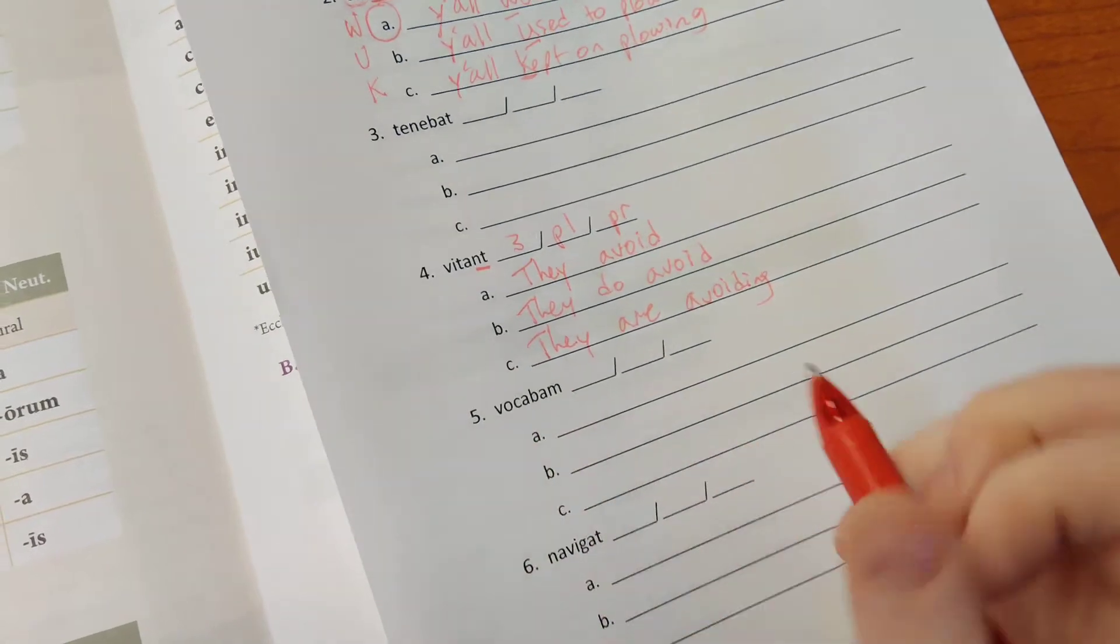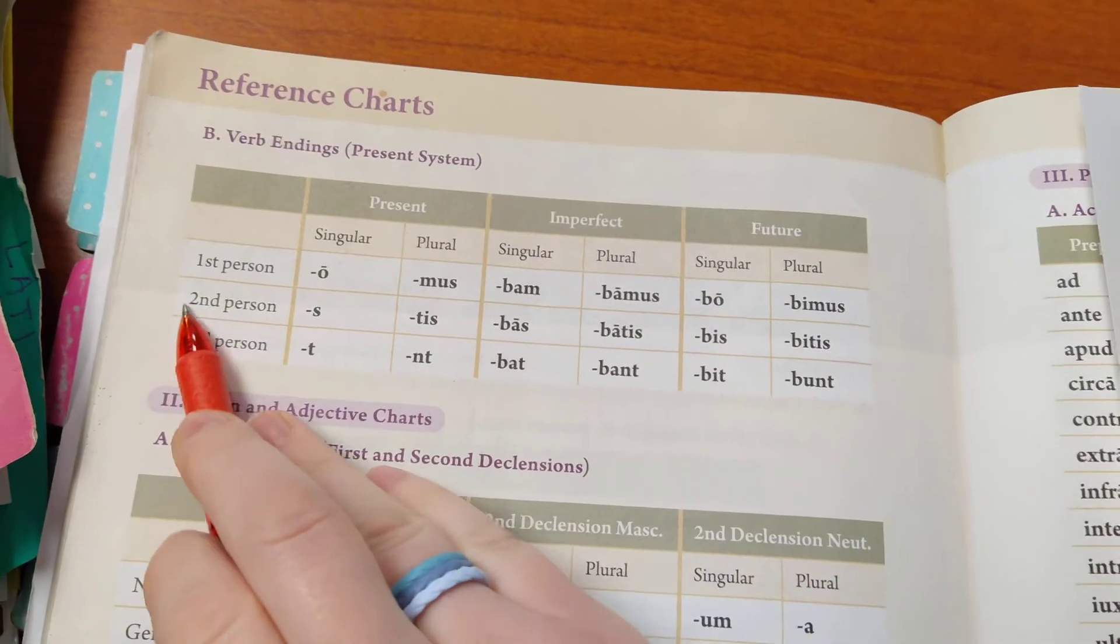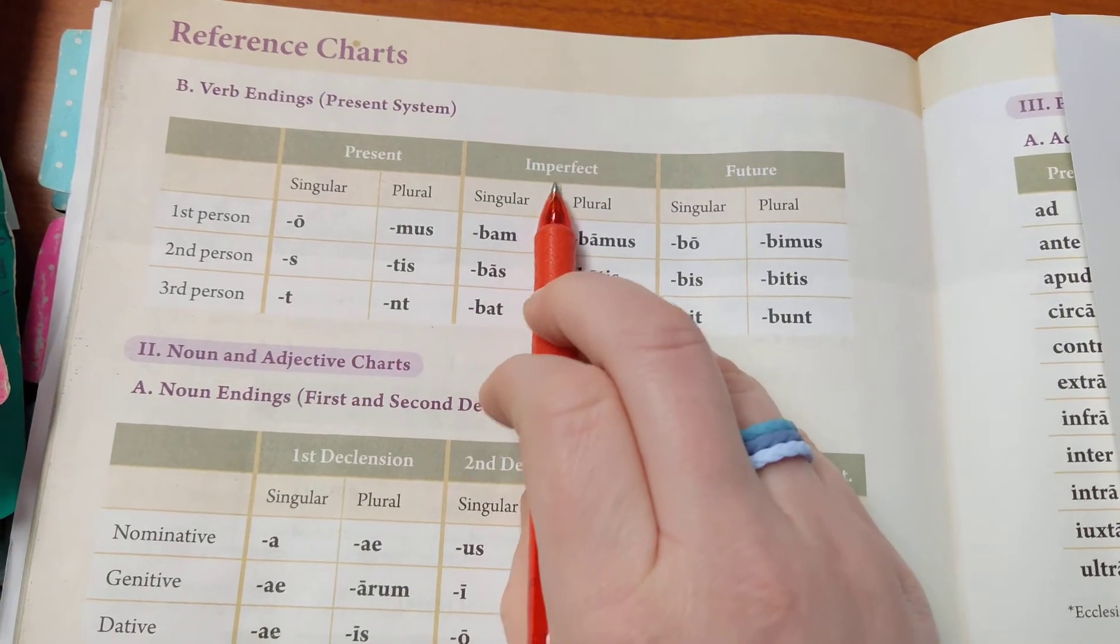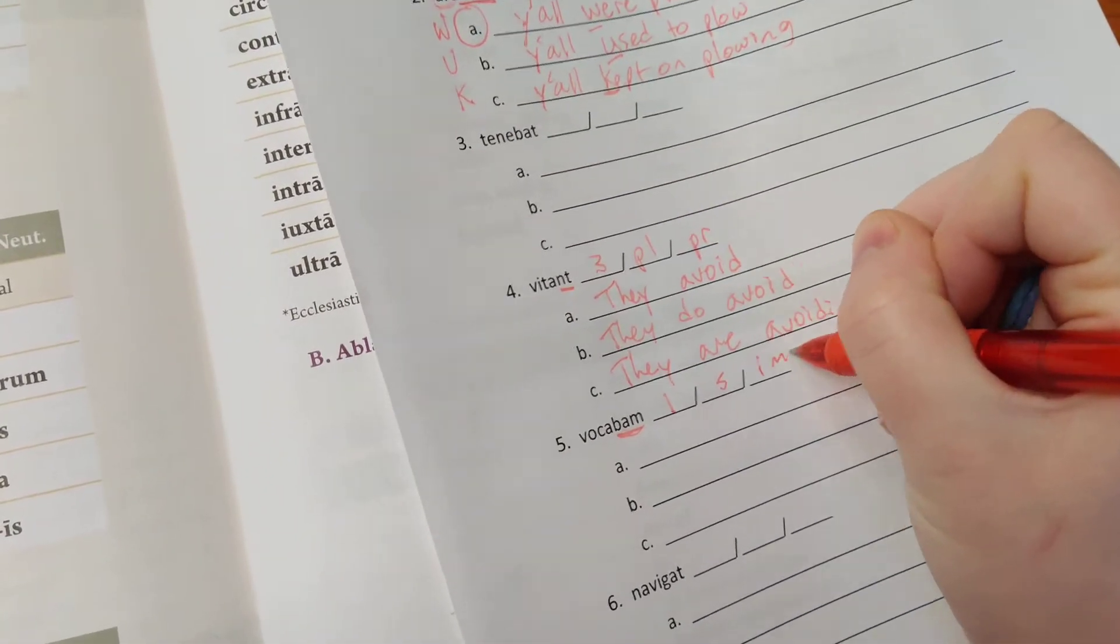Vocabam. Our ending on that one - we've got -bam. So our ending is -bam. That in our chart is first person, singular, imperfect tense. So first, singular, imperfect.